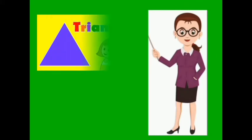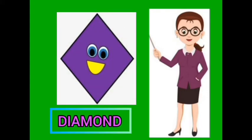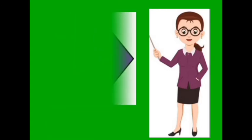This is a triangle. What is this children? A triangle. This is a diamond. What is this? A diamond.